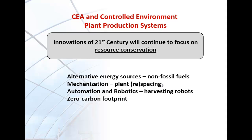In the 21st century we'll continue resource conservation, developing alternative energy sources from non-fossil fuels. Mechanization will help move plants more efficiently, particularly for respacing, reducing labor costs. Automation robotics — labor for harvest is becoming more difficult to find and robots may begin taking over that task. Zero carbon footprint: minimizing carbon output by the system and recycling it back in for a net zero carbon footprint.